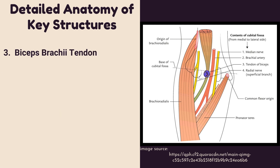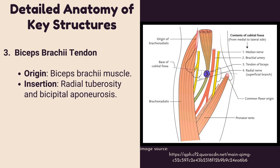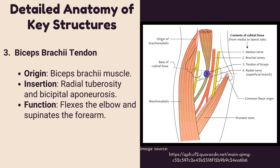The biceps brachii tendon — origin: it is the tendon of the biceps brachii muscle. Insertion: it is inserted into the radial tuberosity and bicipital aponeurosis. Function: it flexes the elbow and supinates the forearm.